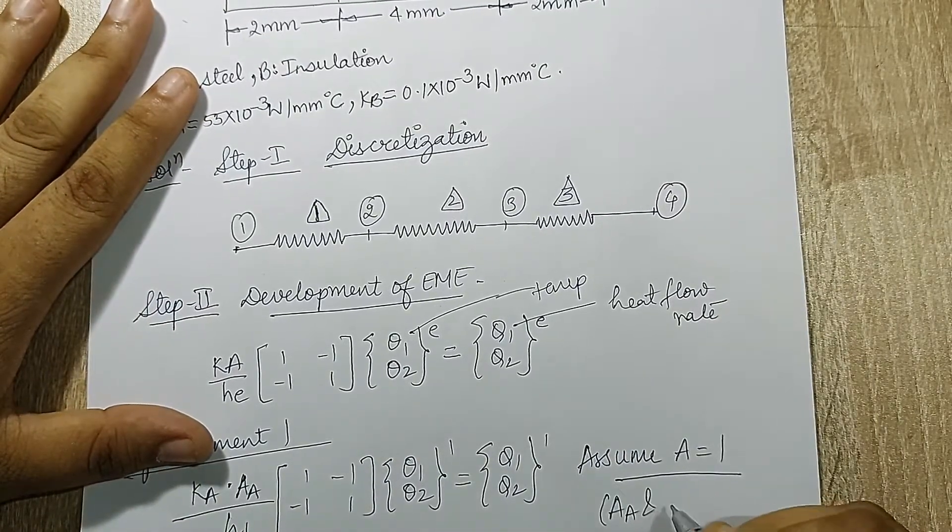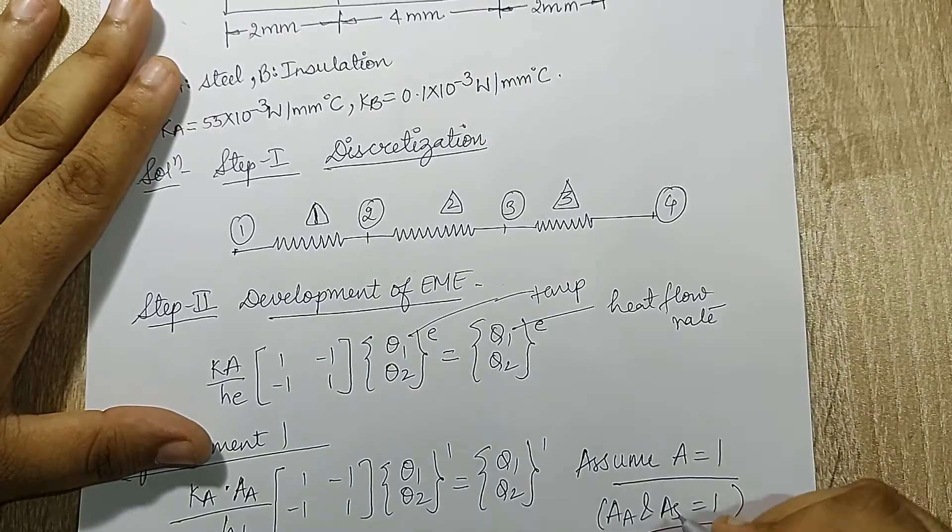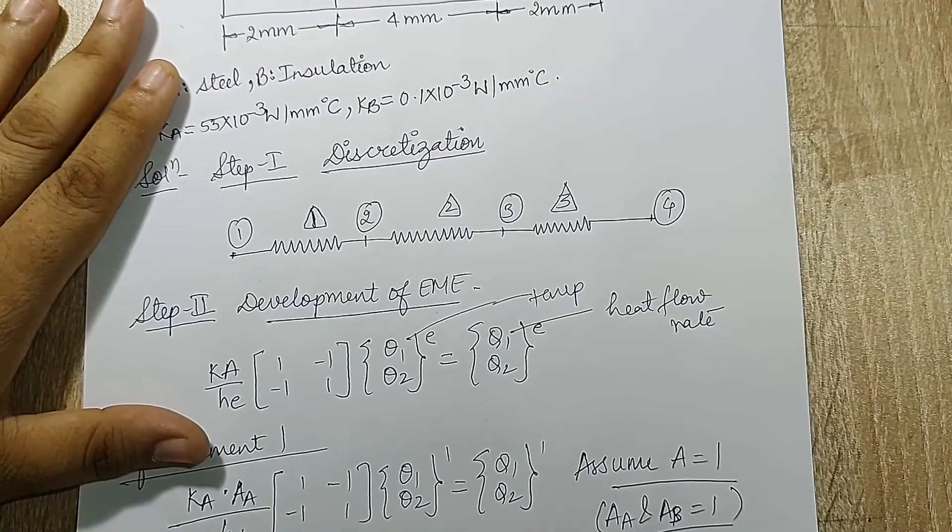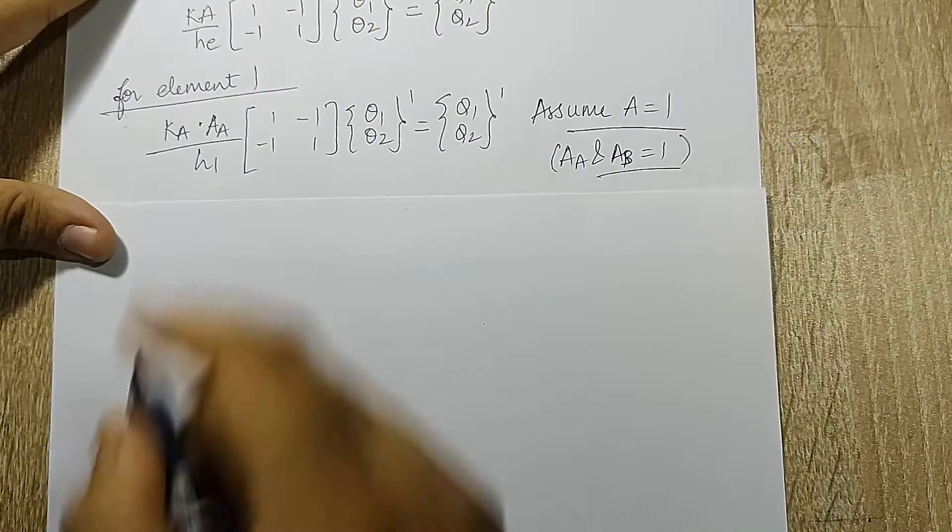Which means my a_A and a_B both will be 1 for the A wall and the B wall. Now I will substitute these values here.